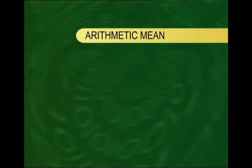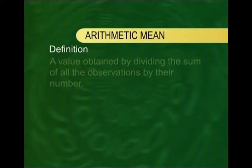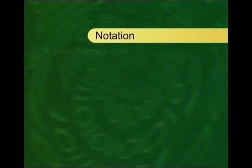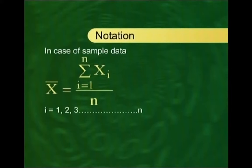Let us now begin the discussion of the arithmetic mean — that value which is numerically the most representative of a variable series. This is the most widely used average, very easy to calculate, and most well accepted. The arithmetic mean, or simply the mean, is a value obtained by dividing the sum of all observations by their number. In case of sample data, the notation is x-bar, and x-bar equals summation of xi over n, where i goes from 1 to n.